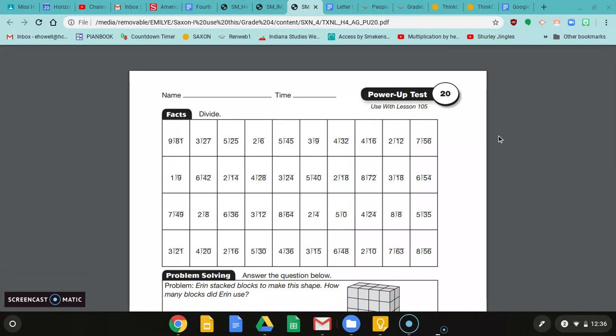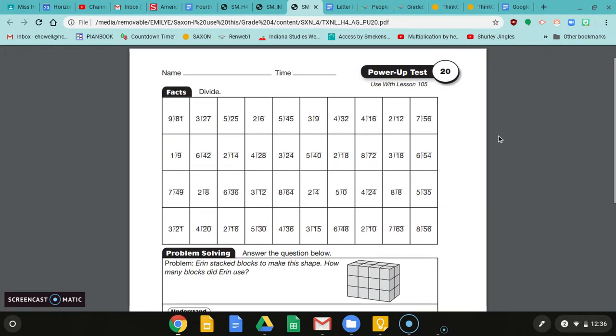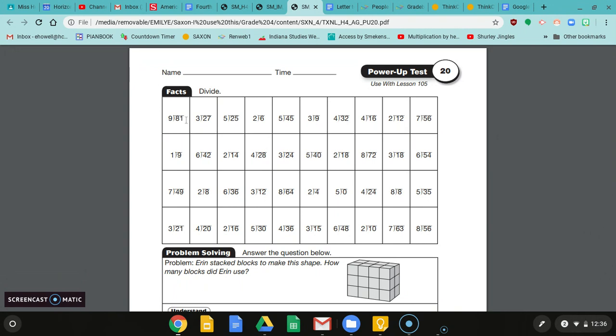All right, so your math today is test 20. You do have division in this part up here, but you don't have to do all the steps in division. These are just the reverse multiplication facts that we know. So 81 divided by 9, write that equals on top.